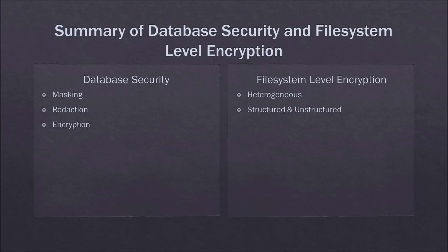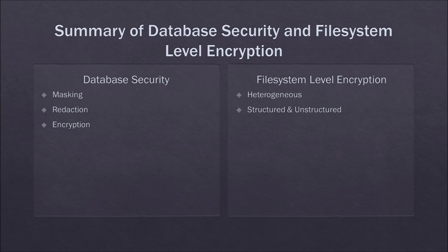To summarize today's discussion on database security and file system level encryption: we introduced the different techniques used in database security, like masking, redaction, and encryption. We also looked at the alternative to database security, which is file system level encryption. File system level encryption is heterogeneous to whatever databases reside on the server, and it allows us to encrypt both structured and unstructured data.